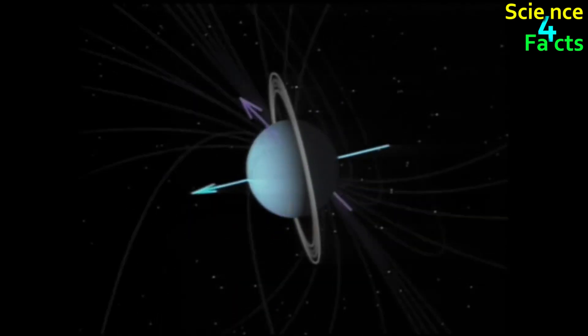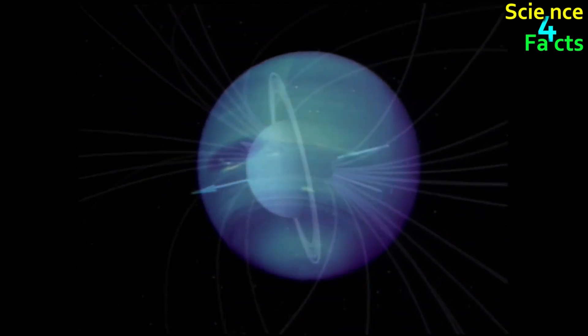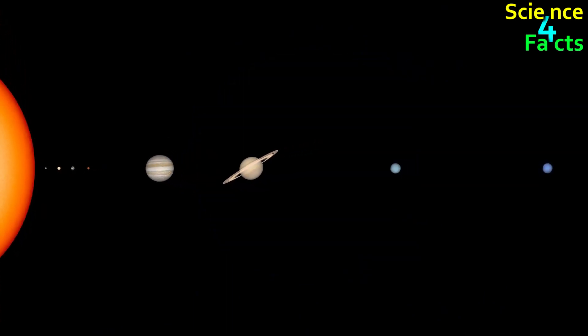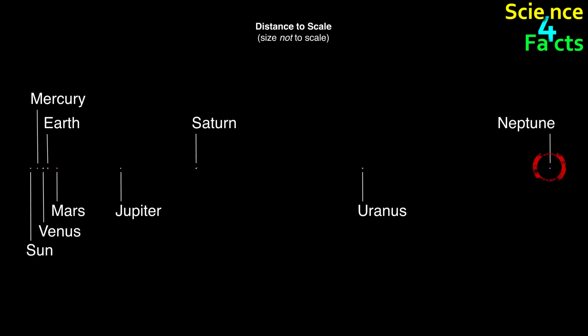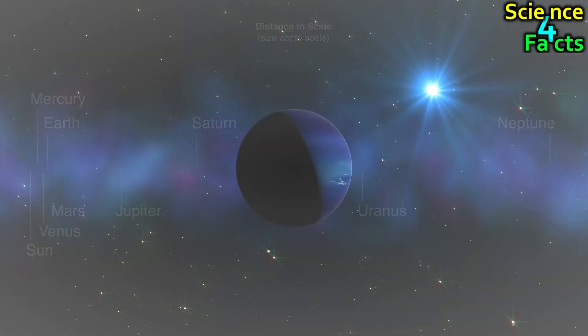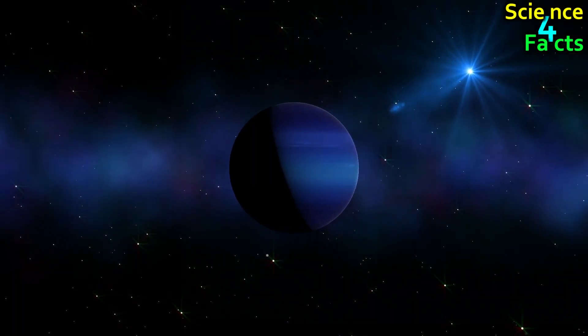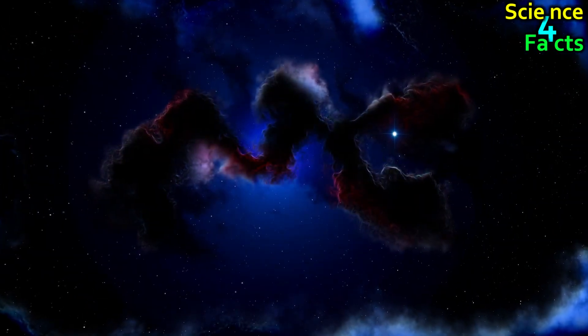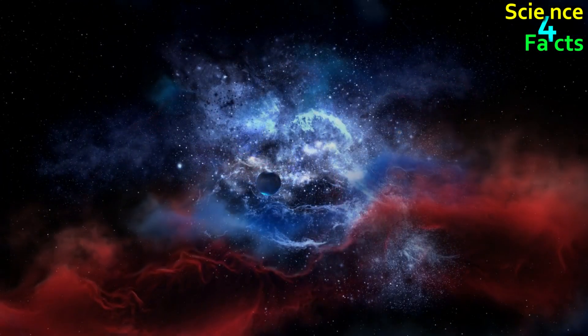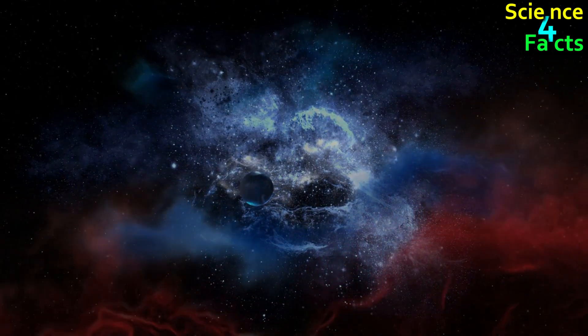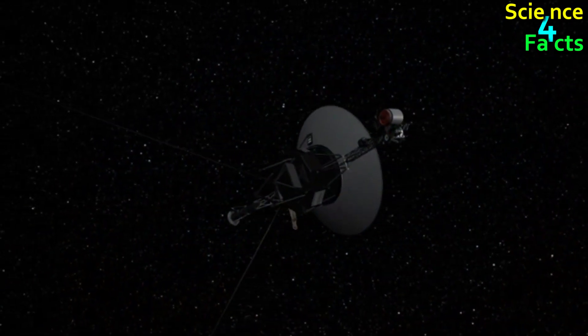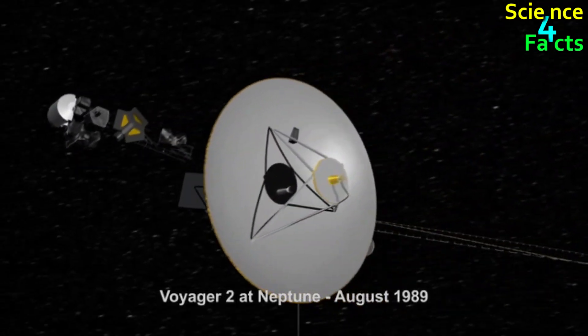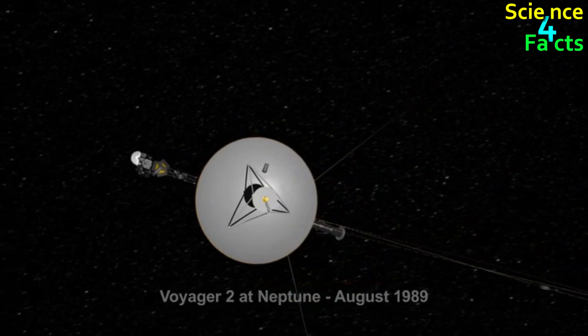Like Uranus, Neptune's unusual tilt also causes extreme seasonal variations on the planet. However, these variations are much more subtle than on Uranus due to Neptune's greater distance from the Sun. While there is no solid land to speak of on Neptune, the planet's atmosphere and unique features make it a fascinating and mysterious object of study in our solar system. NASA's Voyager 2 spacecraft flew by Neptune in 1989 and provided the most detailed images and data we have of the planet to date.